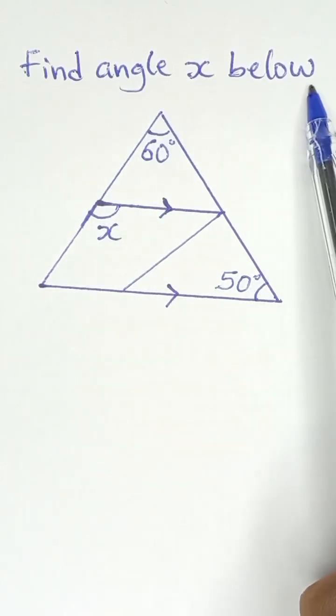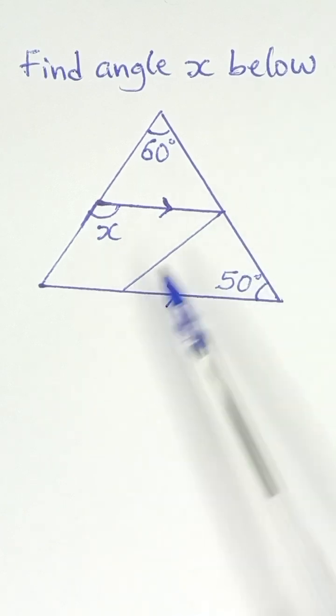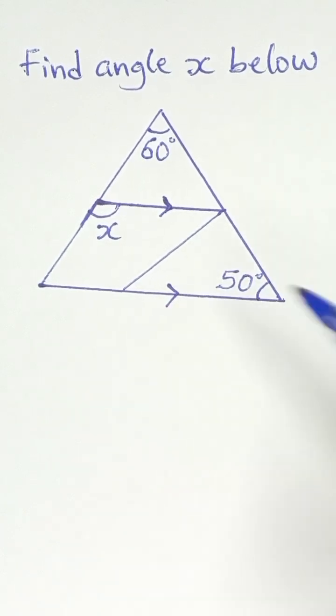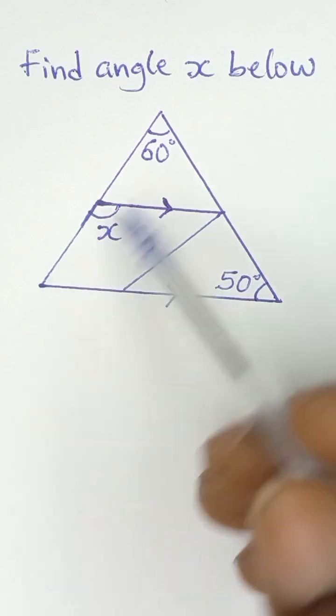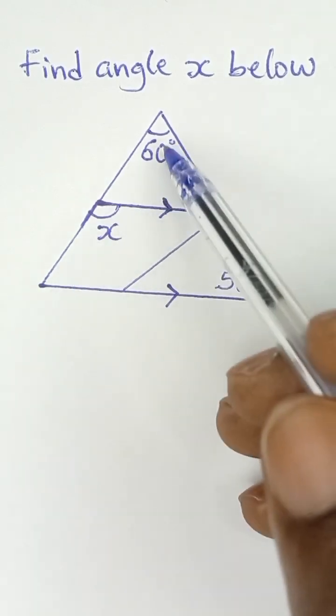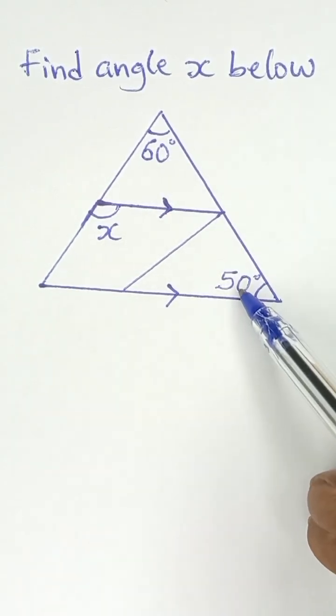Find angle x below. Now for us to solve this, we first of all have to look for sum of angles in a triangle. Sum of angles in a triangle add up to 180 degrees. So 60 plus 50 is